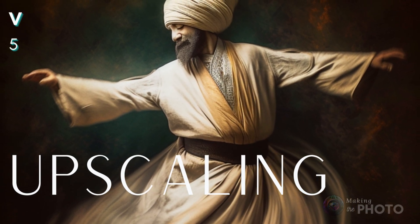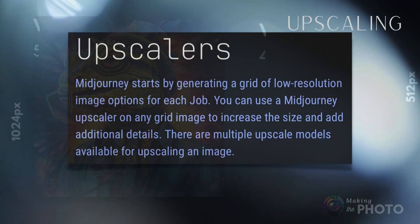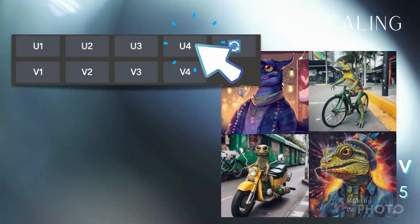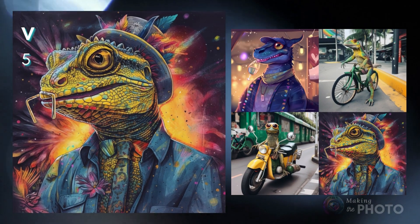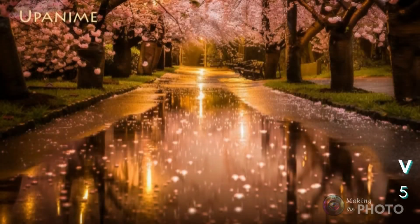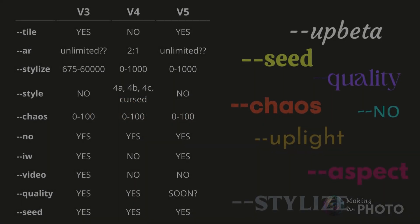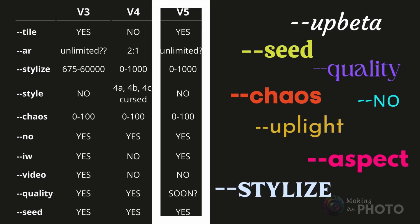Upscalers enlarge your image while also processing it, but the V5 upscalers are not yet operational. The image files generated straight from the grid are already larger than in previous versions. If you click one of the U buttons below the grid, your image will instantly appear at 1024 pixels square without upscaling or altering its appearance. Upscaling parameters include --upbeta, --uplight, and --upanime. Using these in version 5 won't result in an error, but they aren't activated either. Stay tuned for future updates on upscaling functionality.